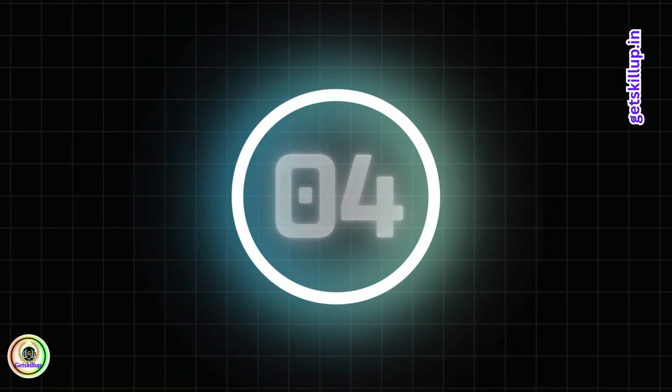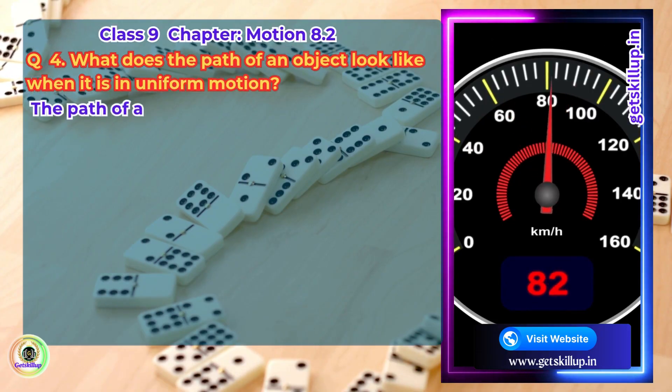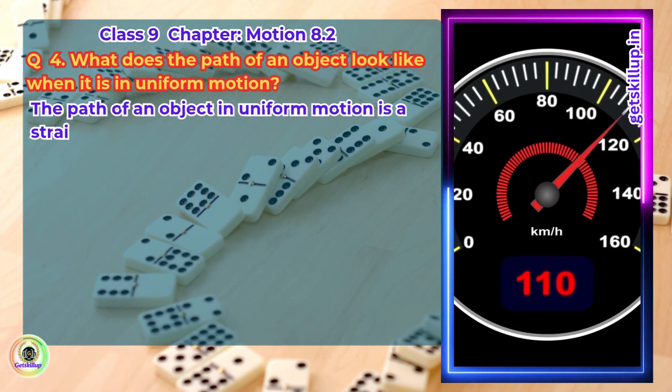Question 4. What does the path of an object look like when it is in uniform motion? Answer. The path of an object in uniform motion is a straight line.